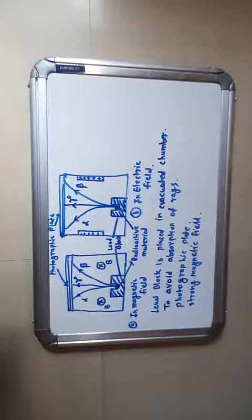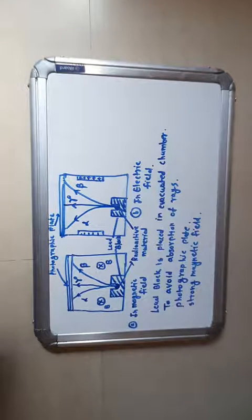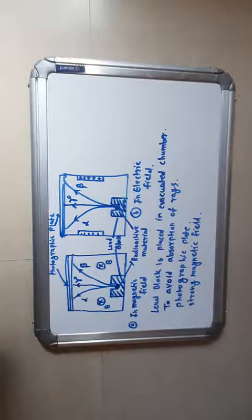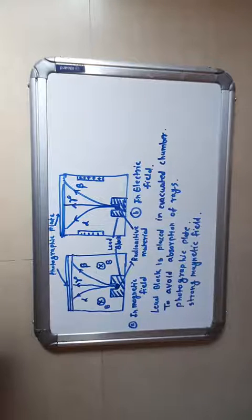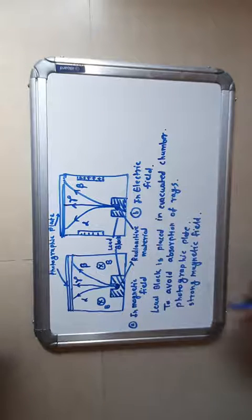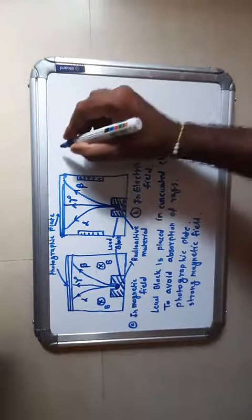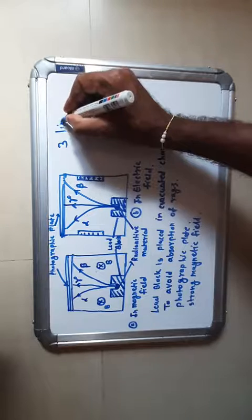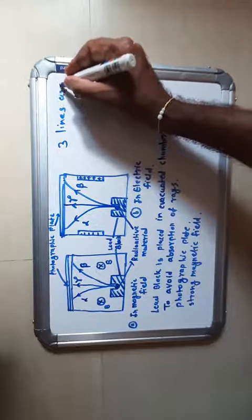The strong magnetic field is applied perpendicular to the plane of the figure and inward, and is also perpendicular to the beam coming out from the hole. After a fairly long exposure, the photographic plate is developed, and three different lines are observed on the photographic plate.